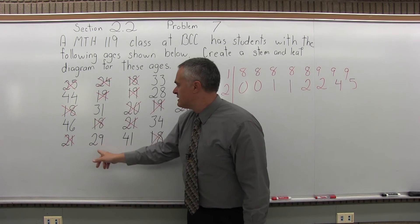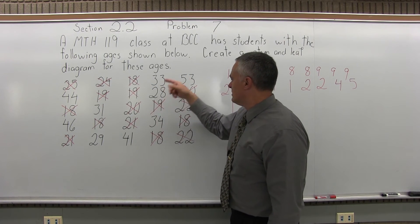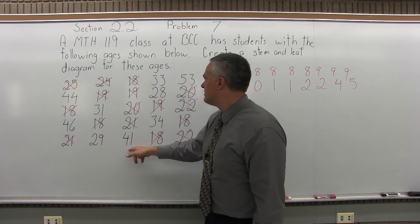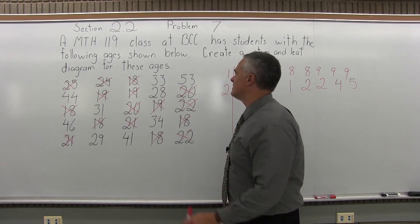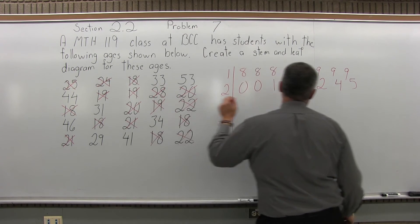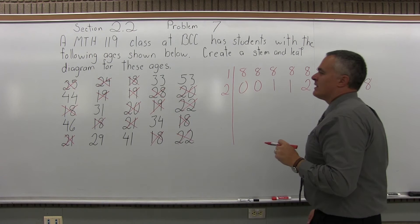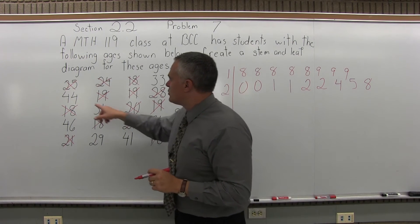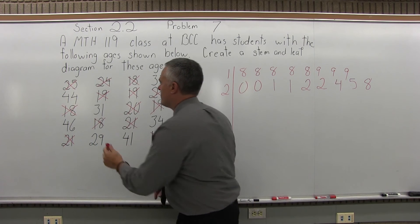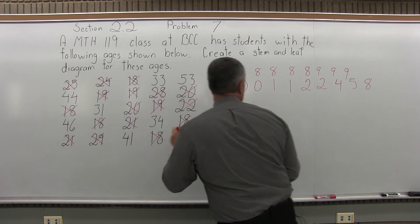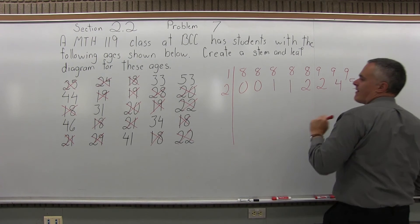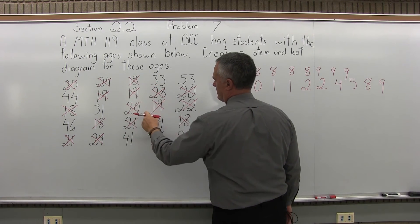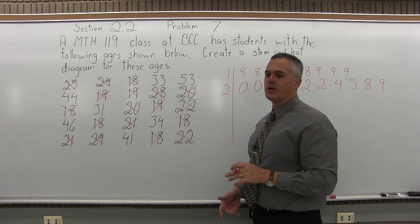Next is 27. As I look through, no. Next is 28, yes. That was the only one, 1 at 28. Next is 29, is 1, put a 9, and that's it for students in their 20s.